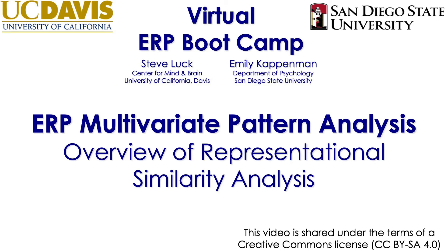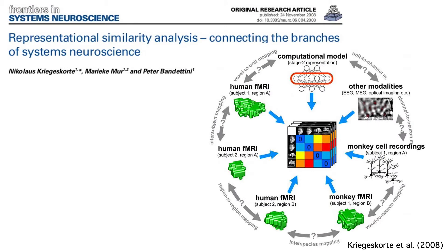In this video, I'm going to provide a brief overview of the application of representational similarity analysis, or RSA, to ERP data. RSA is widely used in fMRI, but it can also be used with ERPs to generate some amazing results. It's a general-purpose method for assessing links among different kinds of neural measures, computational models, and behavior.